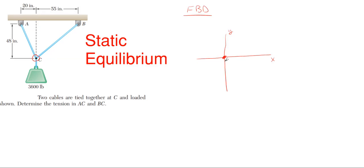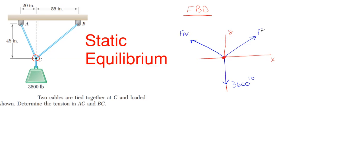I'm going to throw on all my known forces and my unknown forces. I have my known 3600-pound weight, and then I have my two cable forces pulling back in tension trying to keep that weight from falling. These are the unknowns we're tasked with finding: the unknown force FAC and the unknown force FBC.